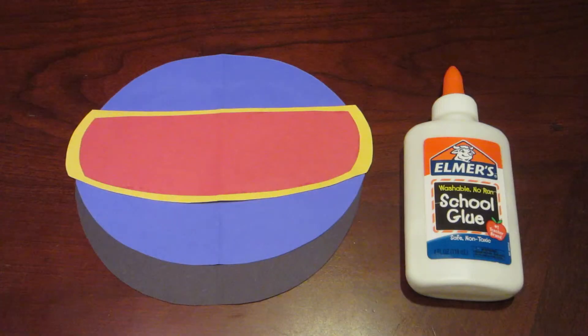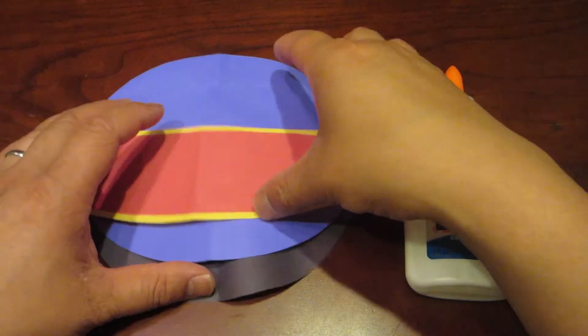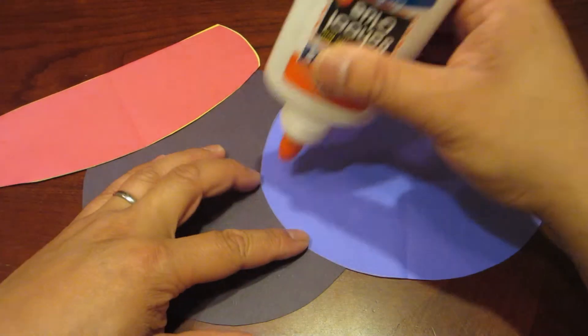Alright, gluing time. Get Cyclops ready and start gluing away. The blue mask layers first.